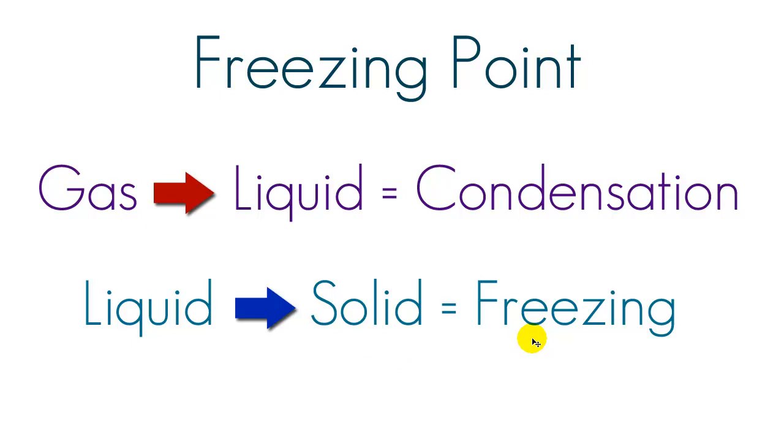So whenever you take the energy away, the particles are going to get closer and closer together until they're tightly packed together again. Whenever you apply energy to something, the particles are going to go crazy. Whenever you take energy away, the particles are going to get closer together again. And by the way, I'm not going to give you the freezing temperature and the boiling temperature because they're the same - the freezing points and the condensation points are the same as the melting and boiling points.